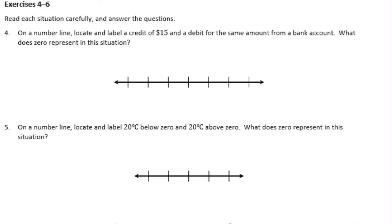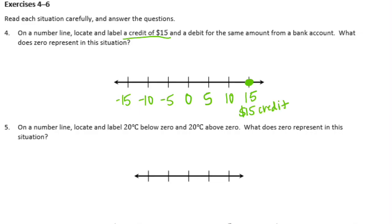Exercises 4 through 6. Number 4: On a number line, locate and label a credit of $15 and a debit for the same amount from a bank account. What does zero represent? I'll put zero in the middle and count by fives — 5, 10, 15, negative 5, negative 10, negative 15. A credit of $15 is positive, and a debit for the same amount is negative 15. Zero would represent no change in the balance of the account.